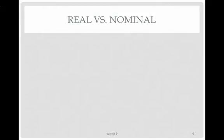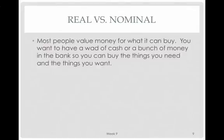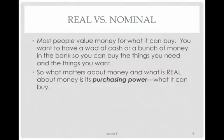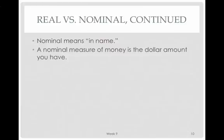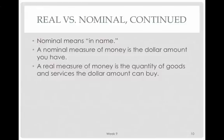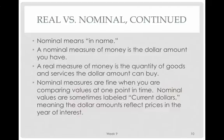Next topic: real versus nominal variables. Most people value money for what it can buy — you want cash or money in the bank so you can buy the things you need and want. The money itself isn't that important; it's what it can buy. That's purchasing power. Nominal means 'in name,' and a nominal measure of money is the dollar amount you have. A real measure of money is the quantity of goods and services that dollar amount can buy.